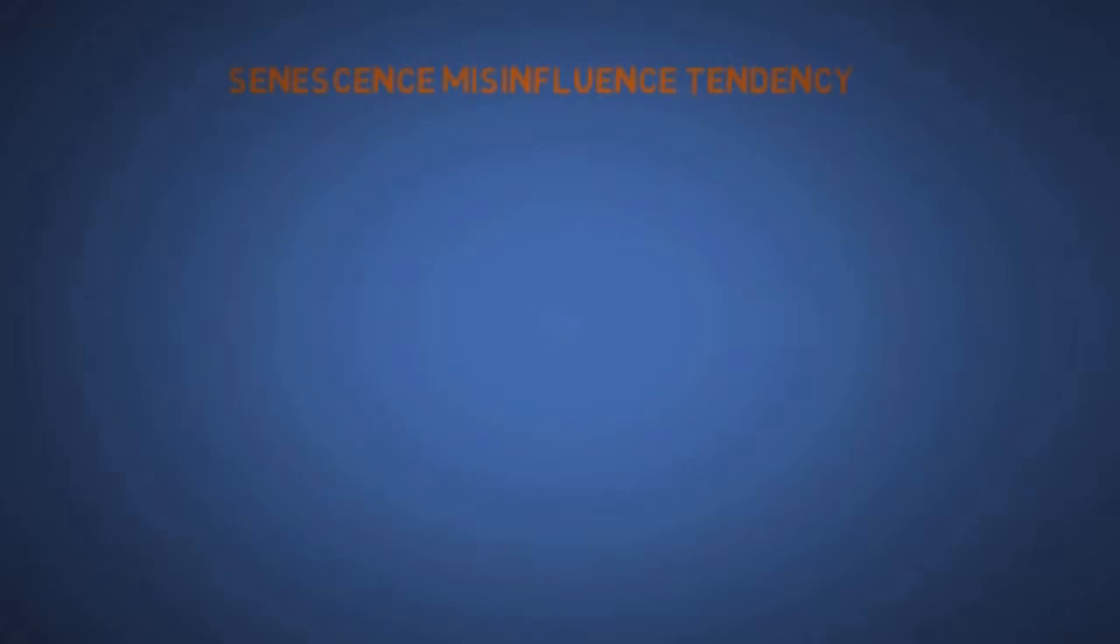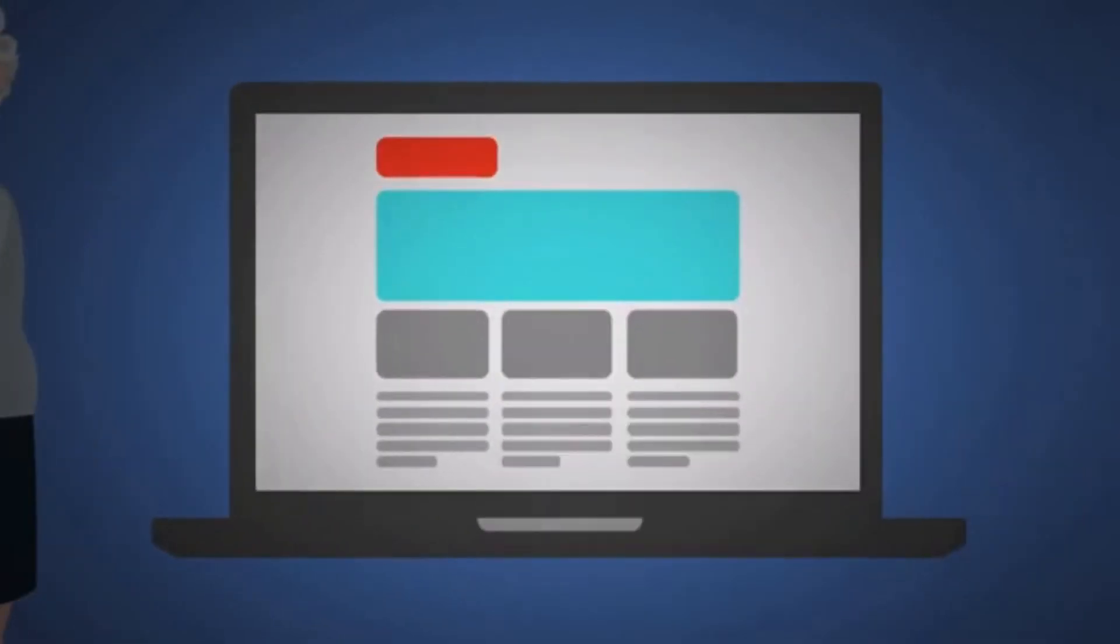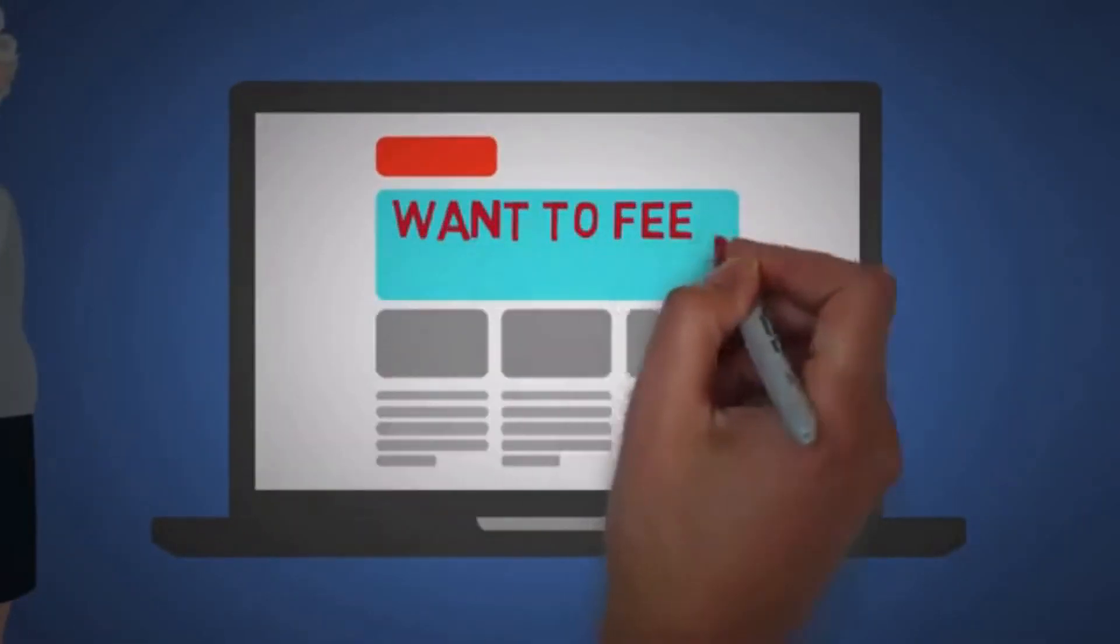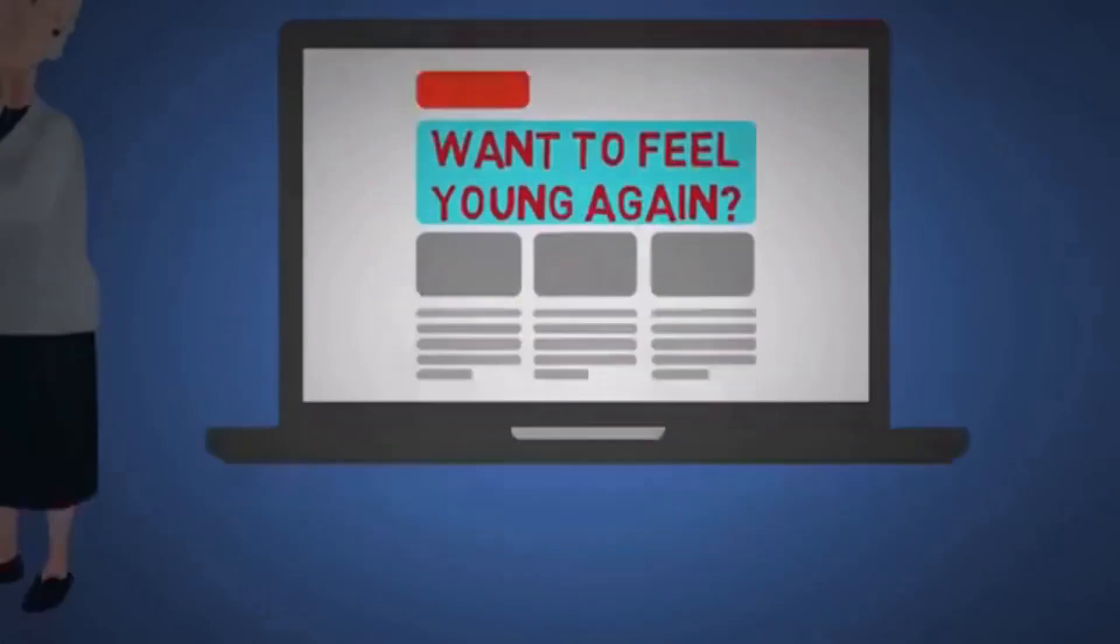The twenty-first is senescence misinfluence tendency. As we age, there is a natural loss of certain skills and abilities. So if you got a website targeted for older people, make sure the fonts are big. Try to speak slower and enunciate your words more.